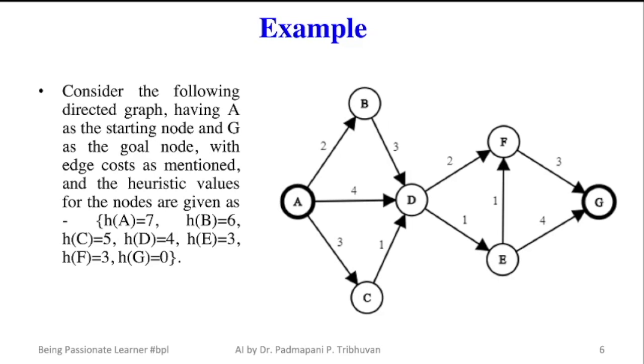heuristic of node E is 3, heuristic of node F is 3, and heuristic of goal node G is 0.